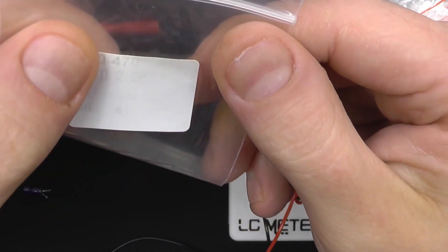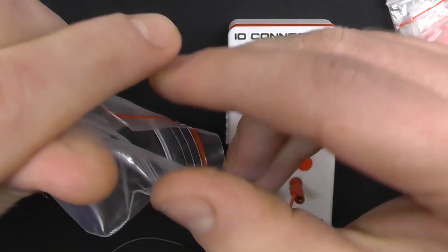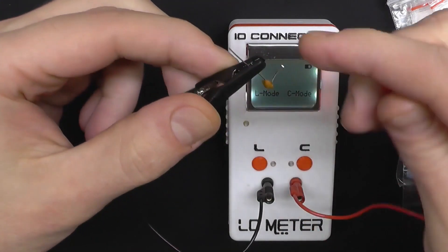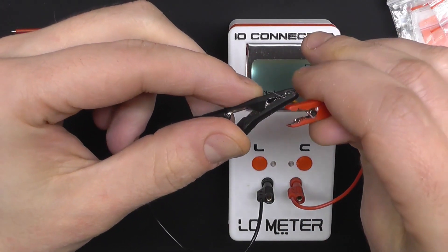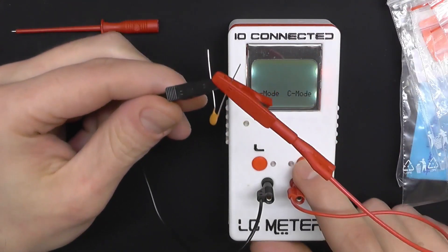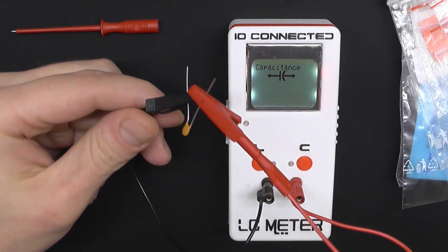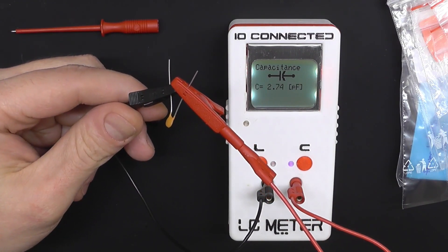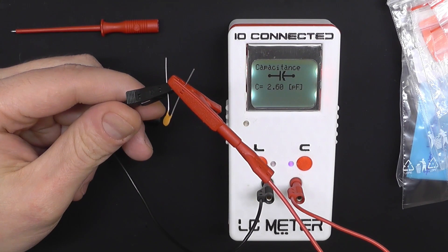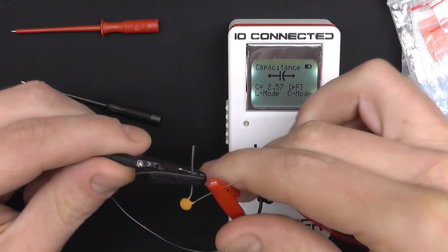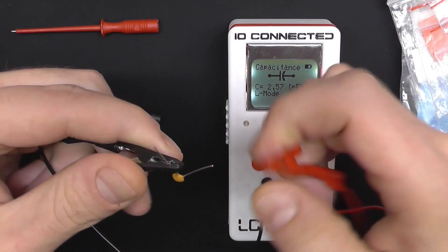This is a 2.2 picofarads. Let's see how it goes. Please keep in mind this is such a low capacitance, these probes I'm using are also adding a little bit of capacitance. For such low values it would be better to remove the leads and just place the part in the female connectors, keep everything as short as possible. Yeah, so very close. We're within 20 percent tolerance. 20% from 2.2 is 0.44, so yeah, 2.6 picofarads would be the upper limit.